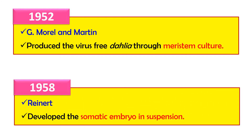In 1958, Reinert developed the somatic embryo in suspension culture. Suspension culture is a technique in which cells remain suspended in a liquid medium. In that medium, the somatic embryo was developed by Reinert in 1958.